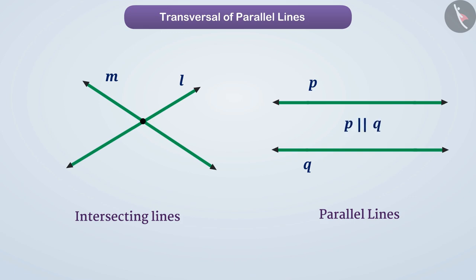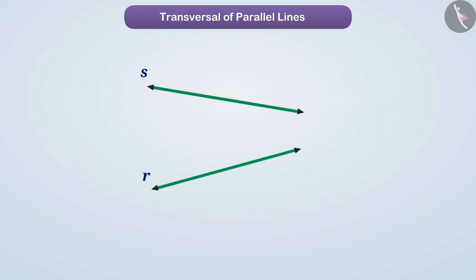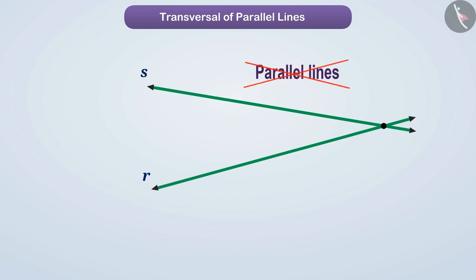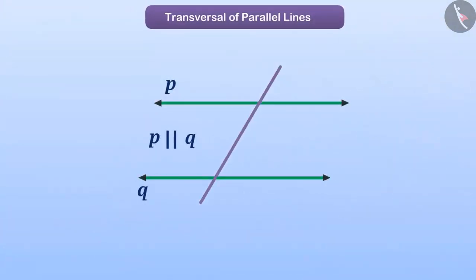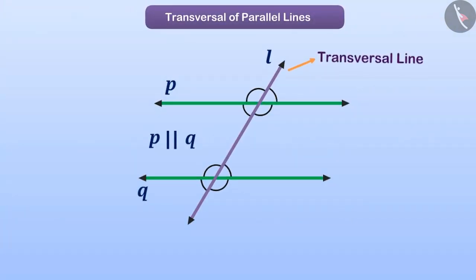Now, look at this pair of lines. The two lines in the figure do not intersect, but they have no end points. So let's extend them. If we look at them, they intersect at one point. That is, both the lines are not parallel, but intersecting lines. Today, we will discuss the transversal on parallel lines.